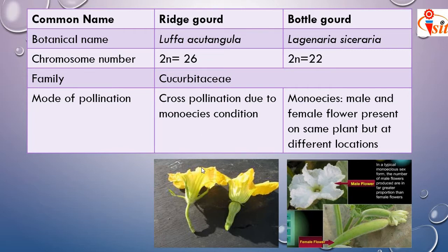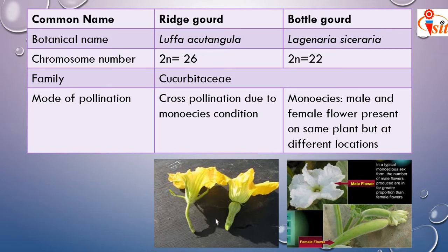This monoecious condition is responsible for cross-pollination in ridge gourd and bottle gourd. The yellow color flowers you see are bottle gourd flowers. The main question is how to identify male and female flowers in Cucurbitaceae. The breadth of female flowers is slightly more than that of male flowers. Male flowers are more in number and narrower. Female flowers have a fruit-like ovary structure below the petals.